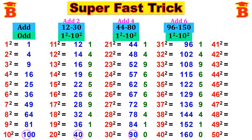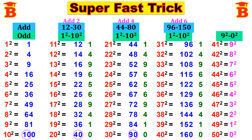Next let us find 41 squared to 50 squared. Here the first step is to write the numbers from 9 squared to 0 squared — that is 9 squared, 8 squared, 7 squared, 6 squared, 5 squared, 4 squared, 3 squared, 2 squared, 1 squared, and 0 squared.